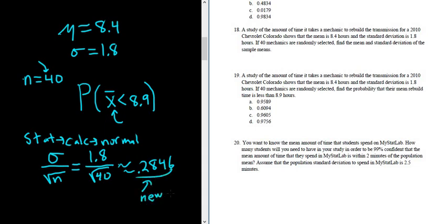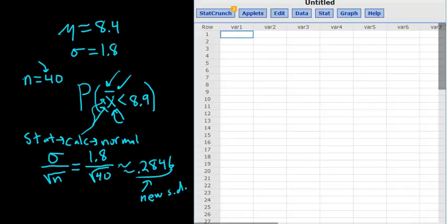This is the standard deviation that we have to put into StatCrunch. The reason we're doing this is because the question is asking us about a probability regarding a sample mean. StatCrunch will require that we enter the standard deviation of the variable we're talking about. So we're talking about the sample mean, so in StatCrunch, we have to enter the standard deviation of the sample mean.